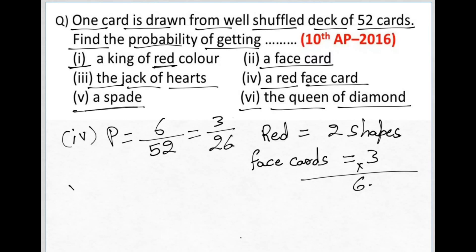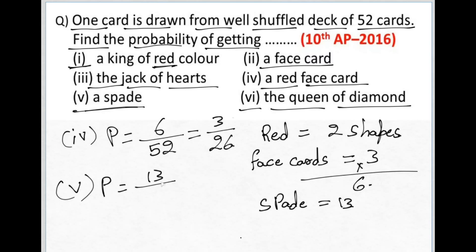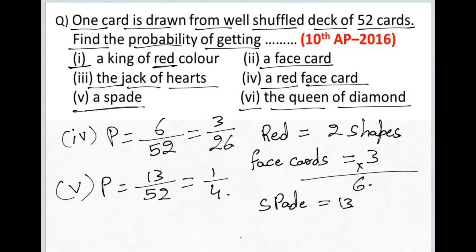The next question asks for the probability of getting a spade. How many spades are there? There are 13 spade cards. So the probability becomes 13 divided by 52, which simplifies to 1 by 4.